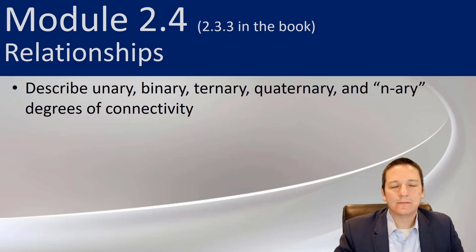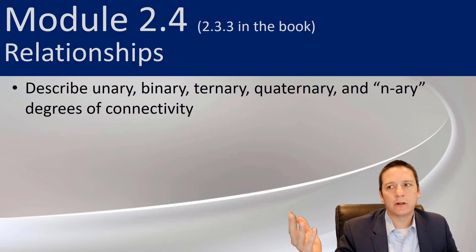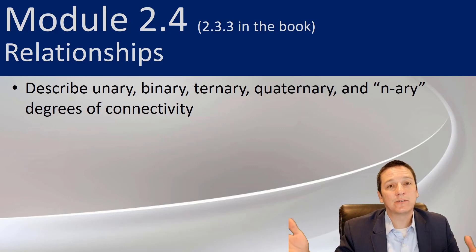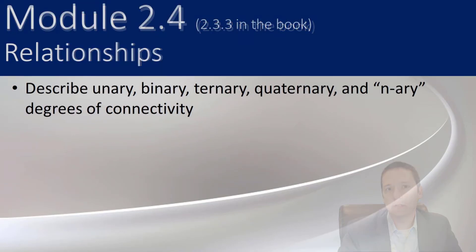And that's it for module 2.4 — unary, binary, ternary, quaternary, n-ary. The degrees of connectivity is all about the number of entities participating in a relationship.